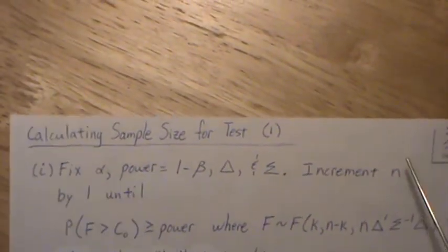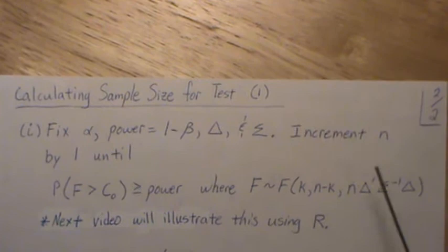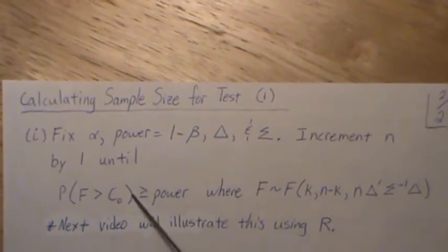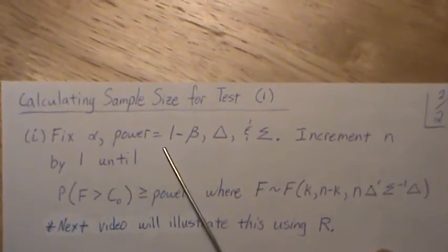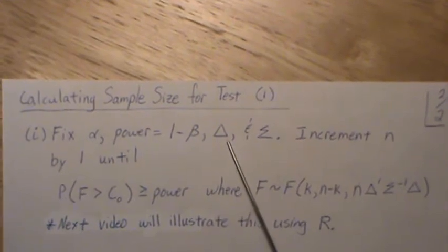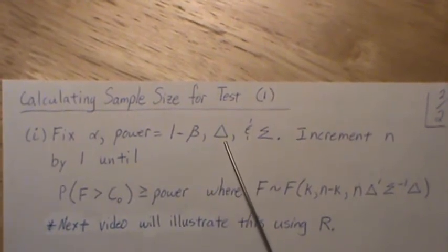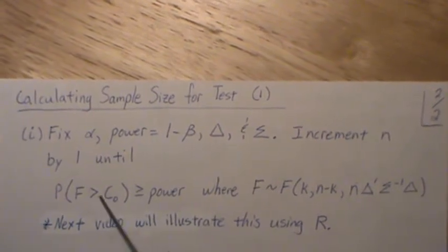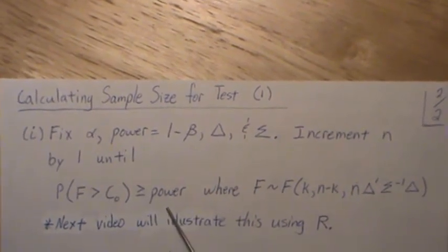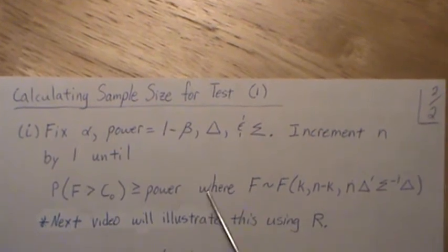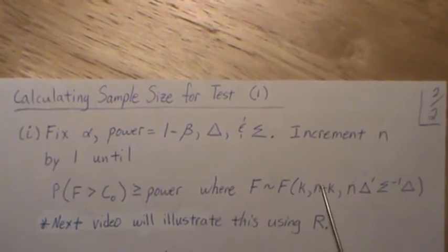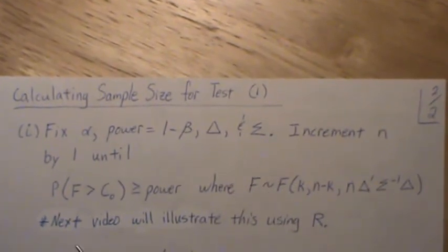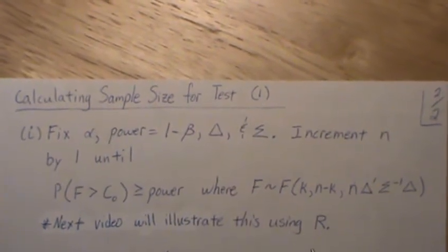So there's two cases here. One, when we know the covariance matrix. So we fix alpha, we fix power, we estimate delta and the covariance matrix sigma. We increment n by 1 until we achieve the power that is desired. And this is where F is from a non-central F distribution. And this test will be illustrated in the next video using R.